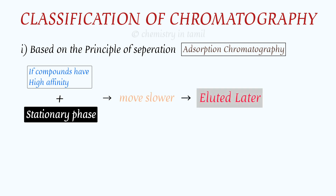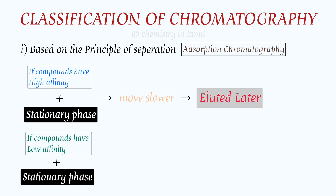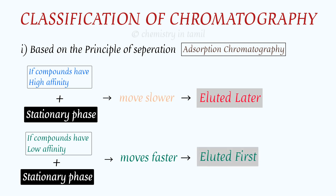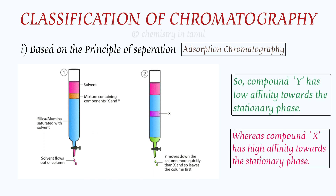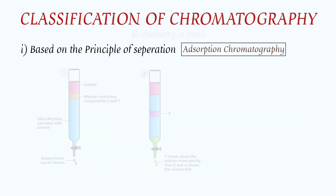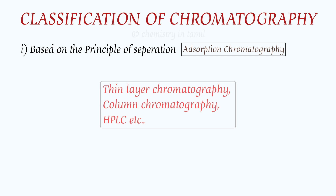If the mixture of compounds is less soluble in the stationary phase and more soluble in the mobile phase, it will move faster and be eluted first. Each compound is separated one by one — this is the adsorption principle. Examples include TLC (thin layer chromatography), column chromatography, and HPLC (high performance liquid chromatography).